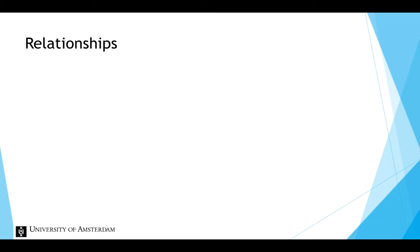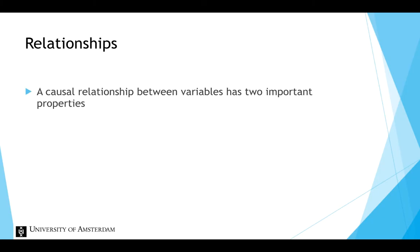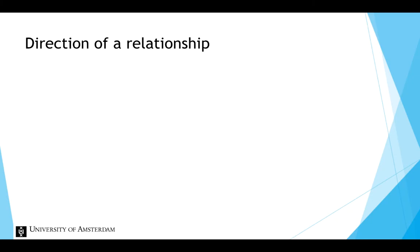The relationships between key concepts in a conceptual model are causal relationships. Causal relationships have two important properties: the direction and the strength. The direction of a causal relationship can either be positive, indicated by a plus sign, or negative, indicated by a minus sign.